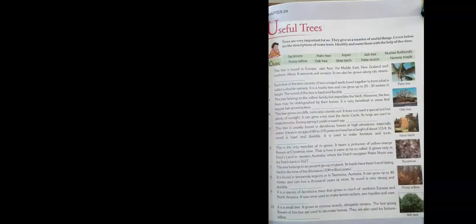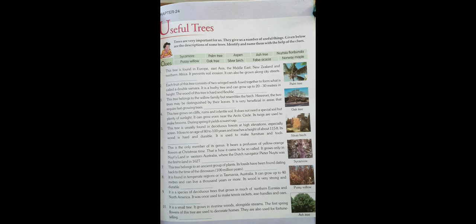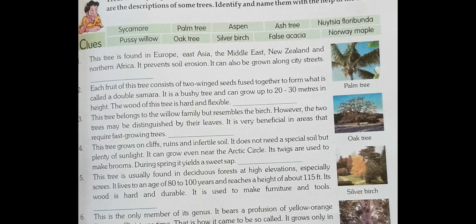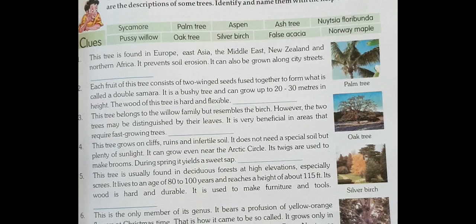Now let's move to the last chapter, chapter number 24: Useful Trees. Trees are very useful and important for us, as they give us a number of useful things. There are descriptions of some trees — for example: sycamore, palm tree, aspen, ash tree, Norway maple, false acacia, silver birch, pussy willow, and oak trees. You can see pictures of these trees.